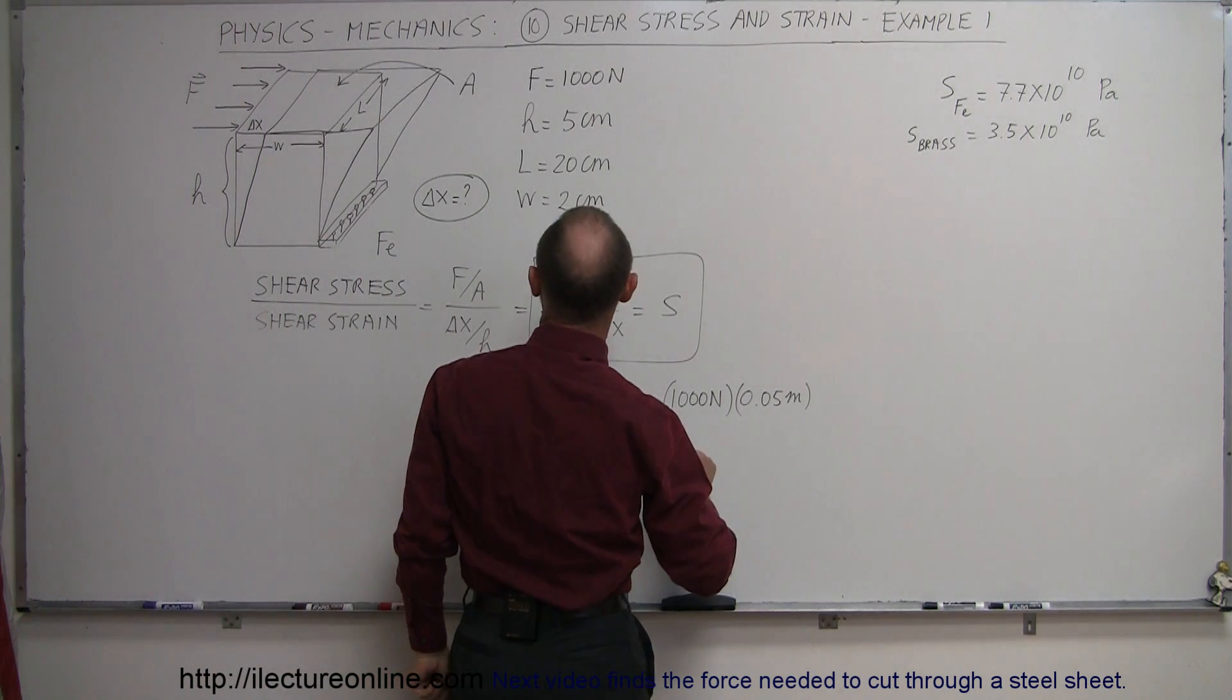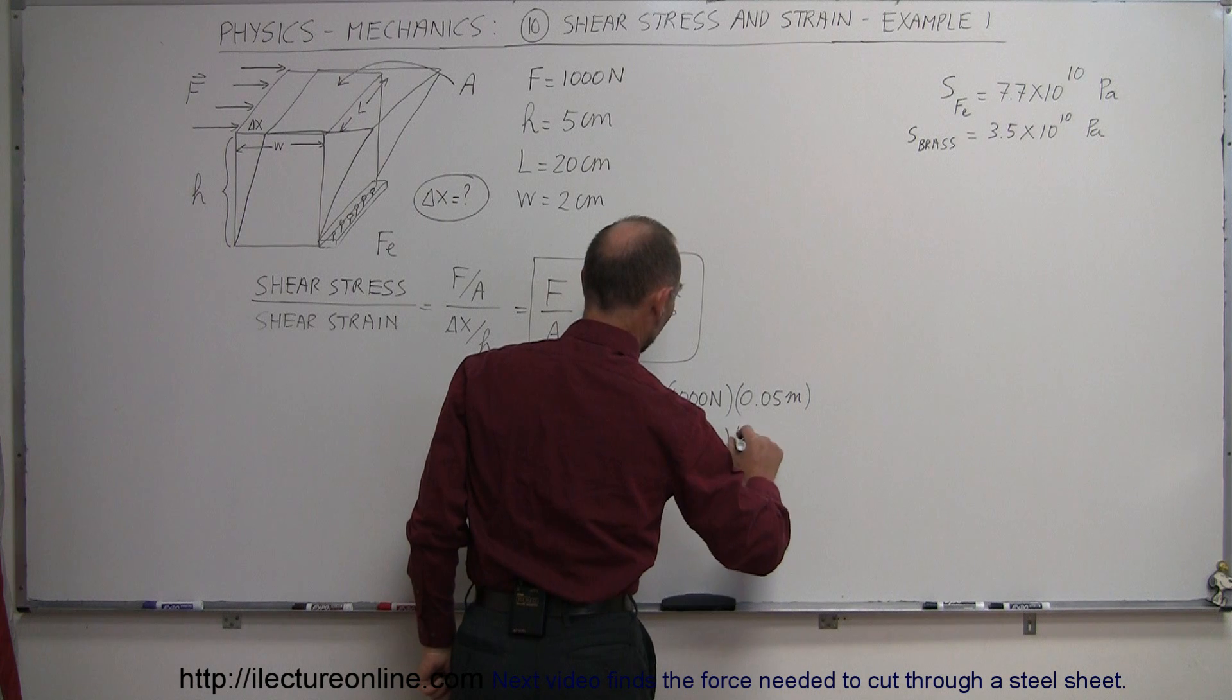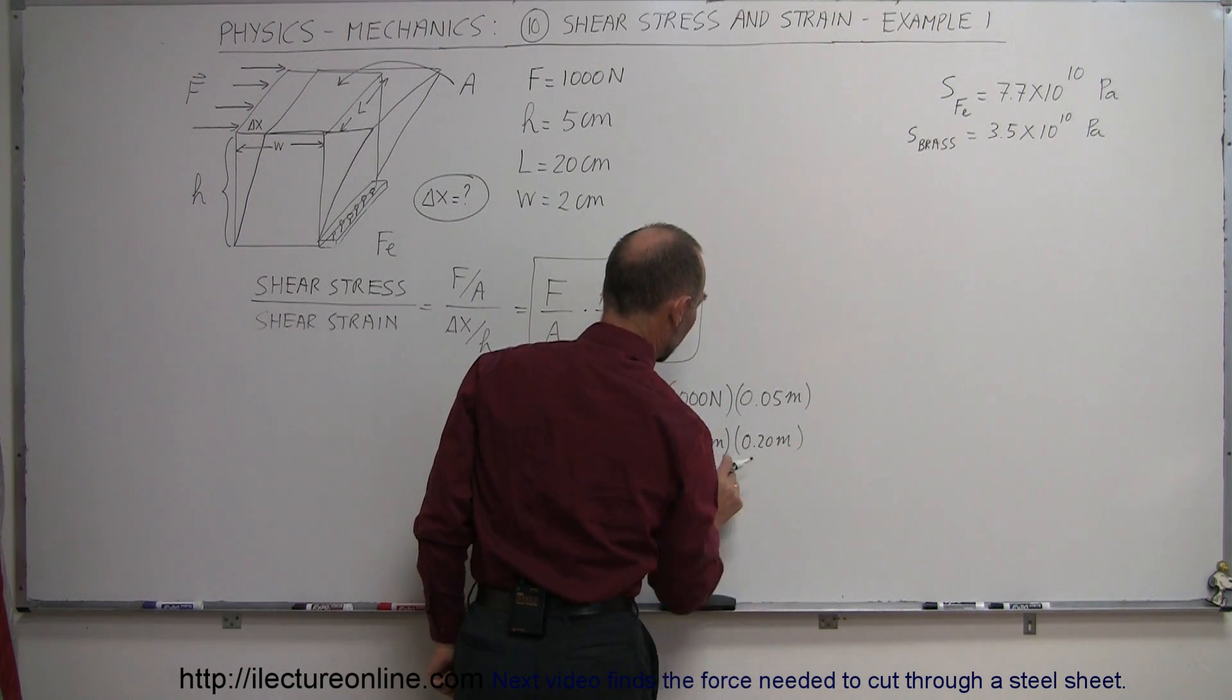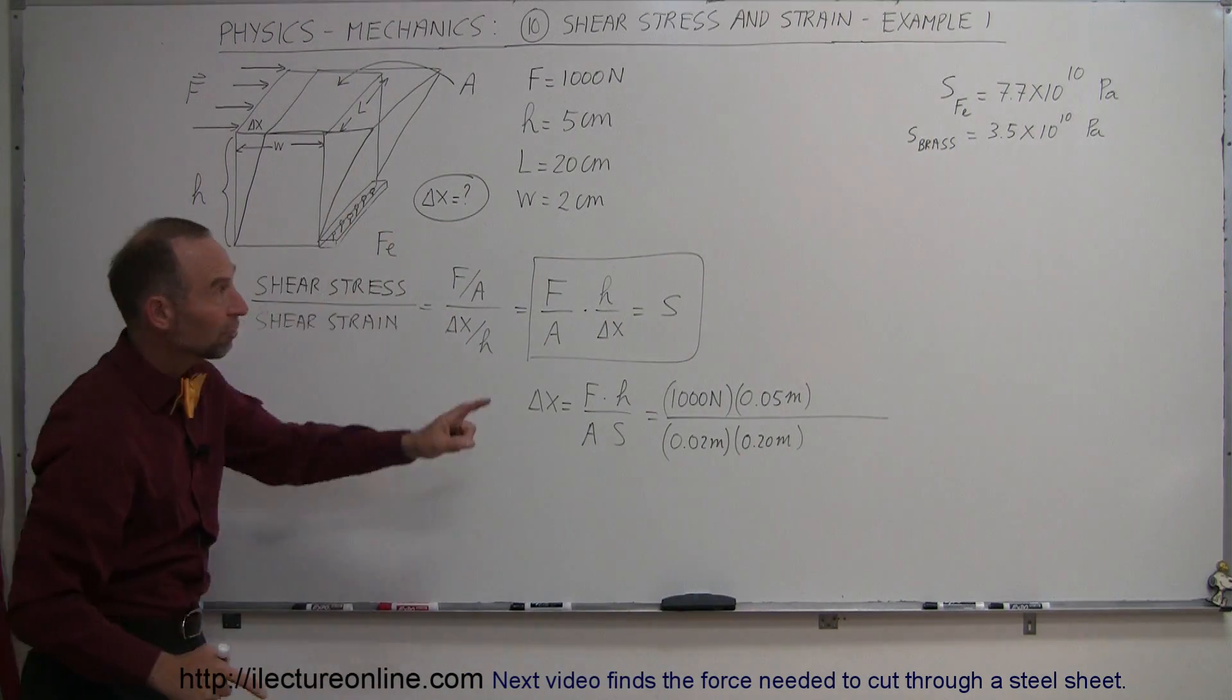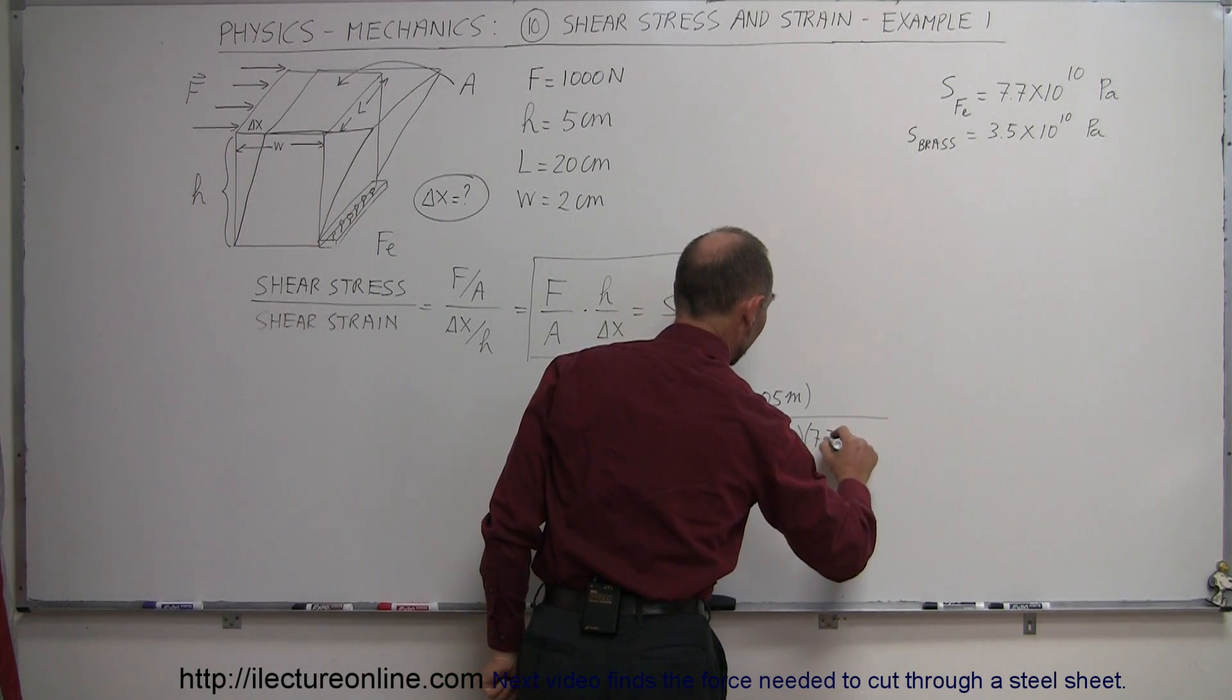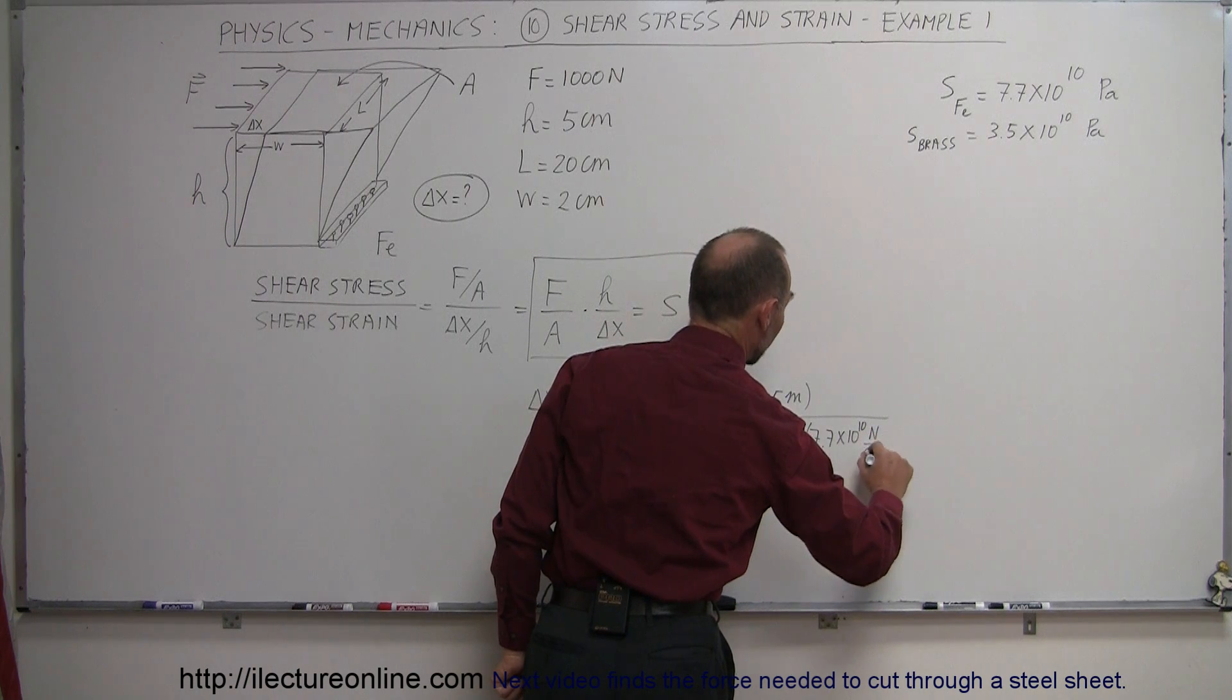So that would be the width is 2 centimeters, 0.02 meters, multiplied times the length, which is 0.20 meters, so that would be the width times the length for the cross-sectional area. And the shear modulus for iron is given to us as 7.7 times 10 to the 10th newtons per square meter.